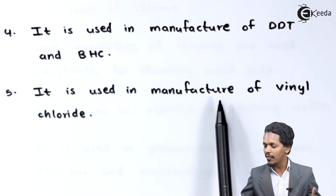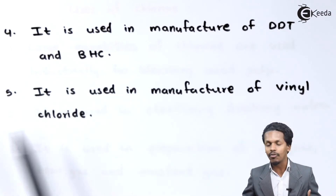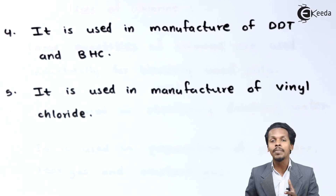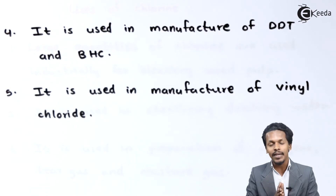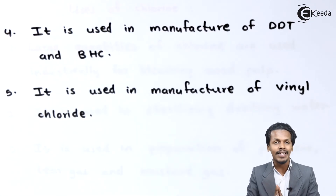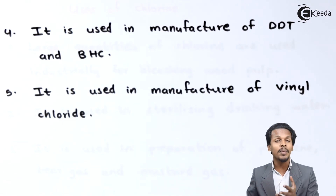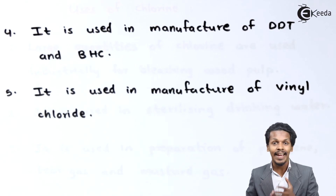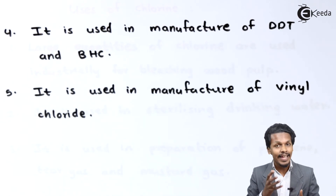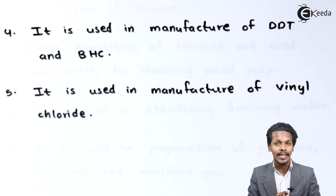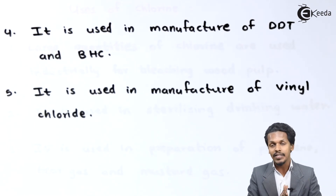Chlorine is used in the manufacturing of vinyl chloride, which is the main starting material for preparing polyvinyl chloride, that is PVC. Chlorine is also widely used to prepare HCl, which is an important industrial chemical.